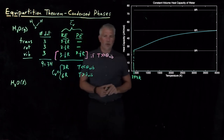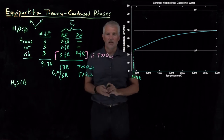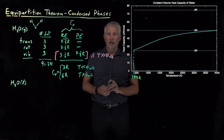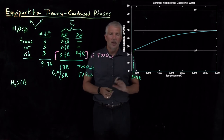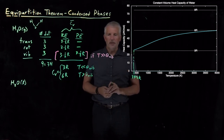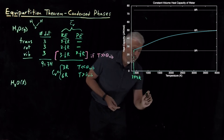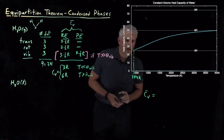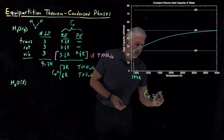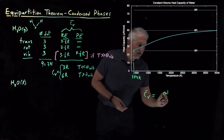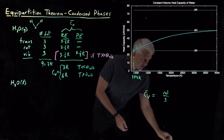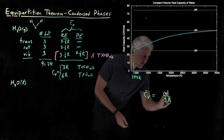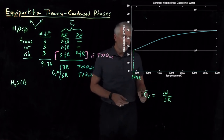The next thing we can do is repeat this exercise to predict the heat capacity of liquid water before looking at the data. We'll learn something interesting about the heat capacities of condensed phases like liquids. We actually already know what the heat capacity of liquid water is: it's one calorie per gram Kelvin — that's the definition of the calorie — which is a specific heat rather than a molar heat capacity.